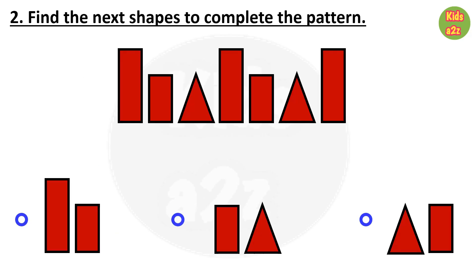Question 2: Find the next shapes to complete the pattern. The pattern is: first a big rectangle, then a small rectangle, and then a triangle. The same thing is repeated — a big rectangle, small rectangle, and a triangle. So after this, a small rectangle and a triangle will come. The correct answer is option 2.